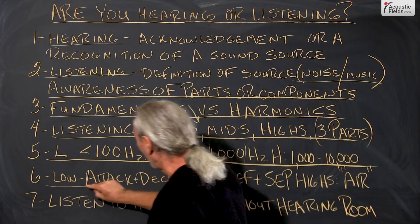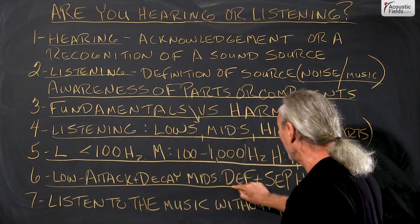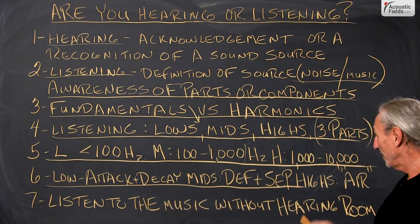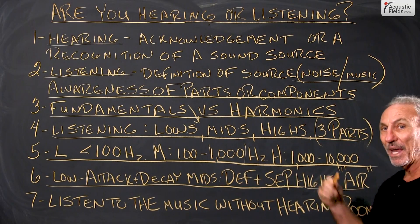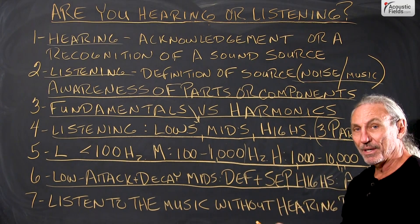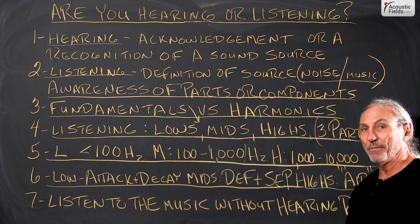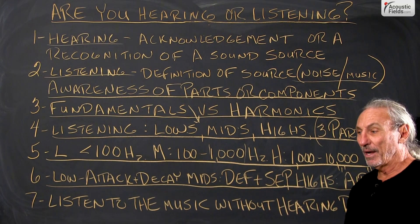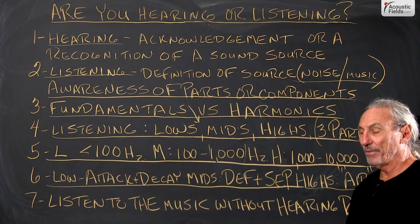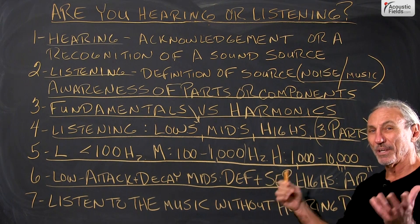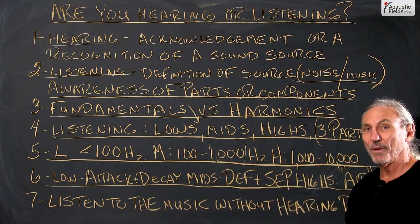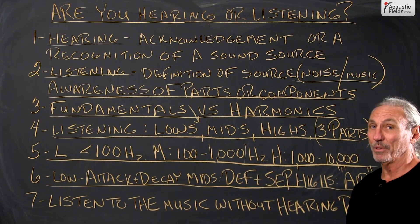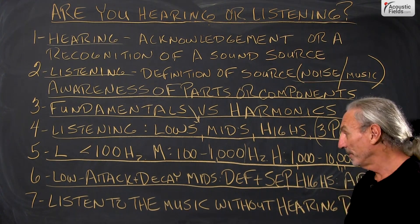With the lows, it's all about attack and decay. Mids — it's definition and separation. And the highs, it's about the air and the ability of everything to move in space easily. I like to think of the highs as feathers — they're really light, they float. You get diffusion assigned to them properly and you can really make them float the way you want to.